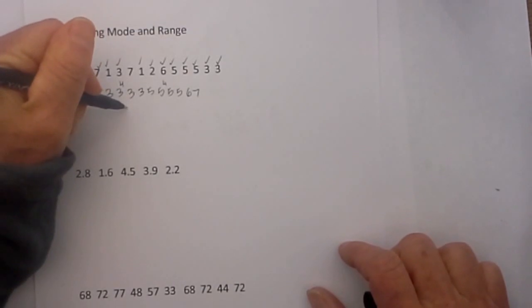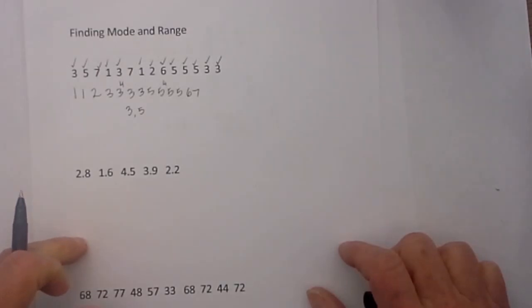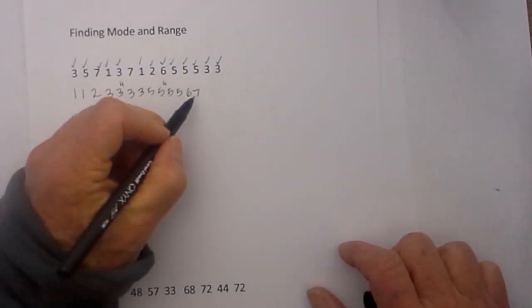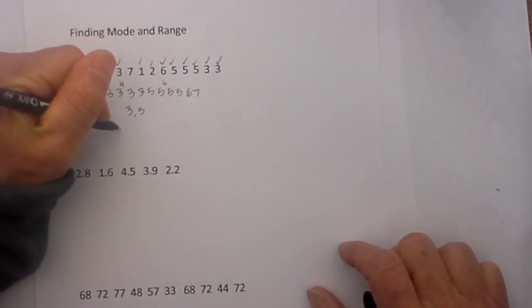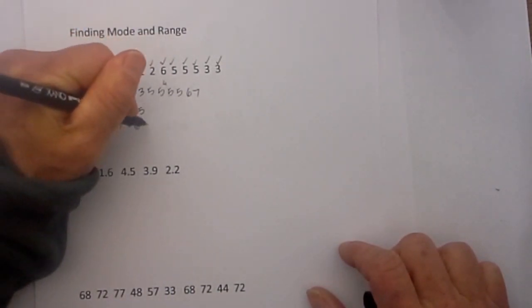So the mode in this particular case would be 3 and 5. Now in order to calculate the range you take the high and subtract the lowest number which is 1, and that equals 6.